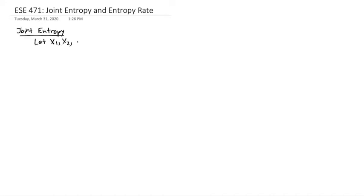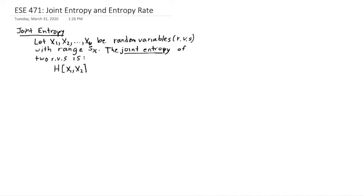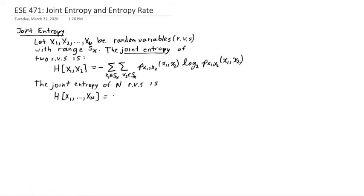Let x1 through xn be random variables with range sx. The joint entropy of two random variables is H(x1, x2), that is negative of the sum of the joint probabilities multiplied by the log of those probabilities. The joint entropy of n random variables together is H of those n random variables. It's negative of the sum of the joint probabilities multiplied by the log base two of those probabilities.